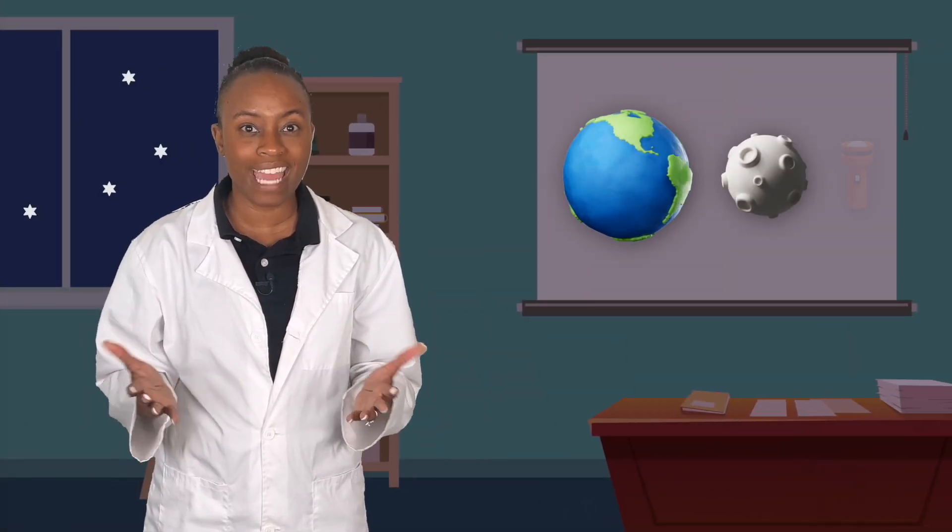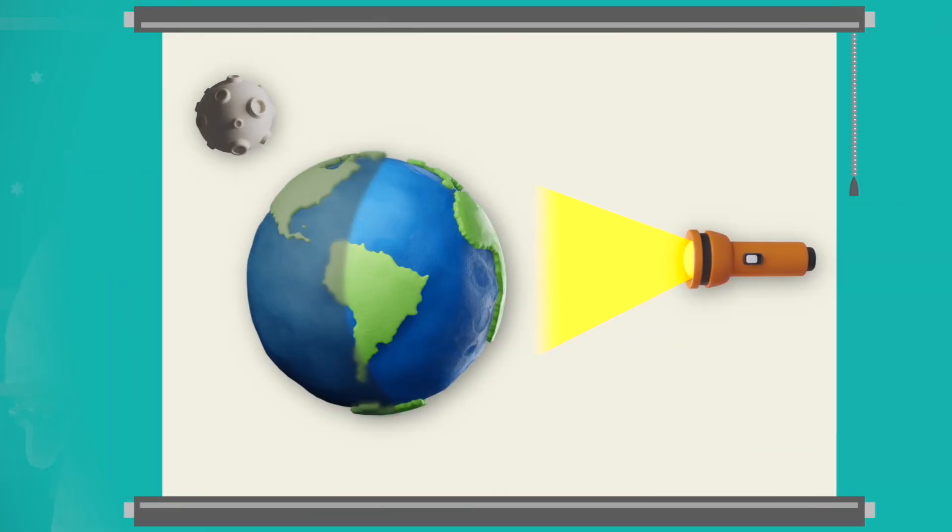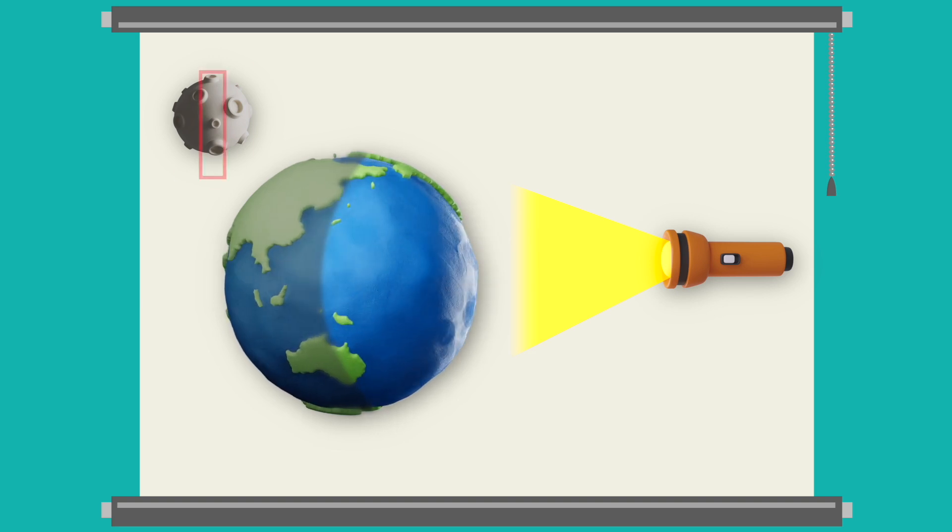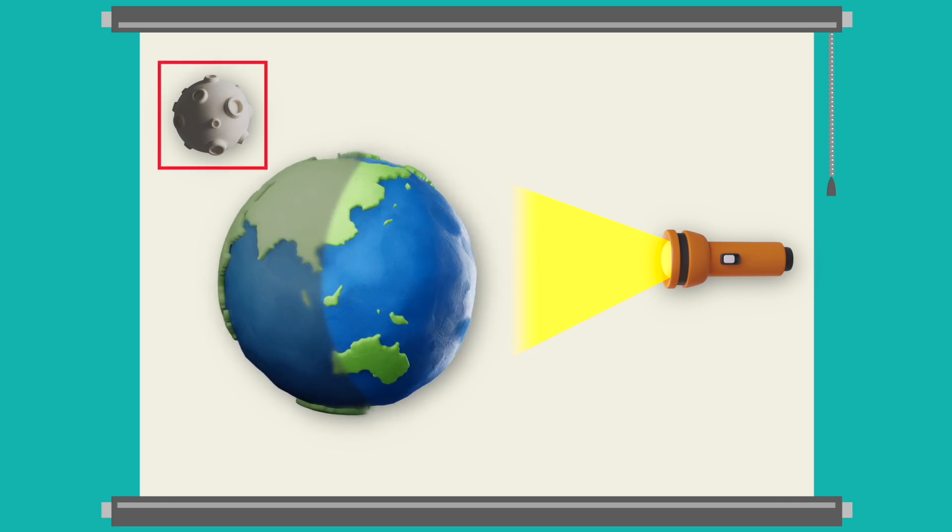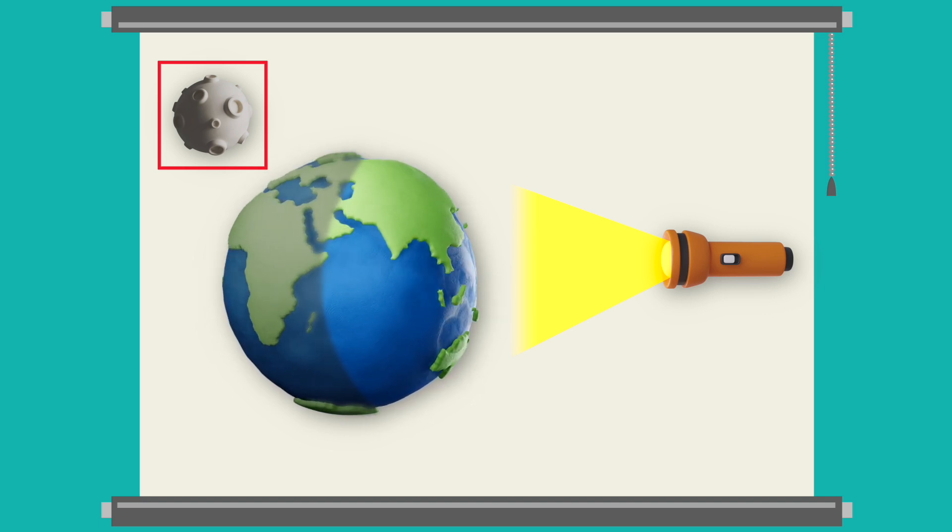Let's do an experiment with our earth, moon, and flashlight sun. So, we have the sun here. See how it's shining on both the earth and the moon? The sun's light is actually what gives the moon its glow. The light bounces off the white moon, kind of like a mirror. That's why it seems to glow. The sun lights it up.